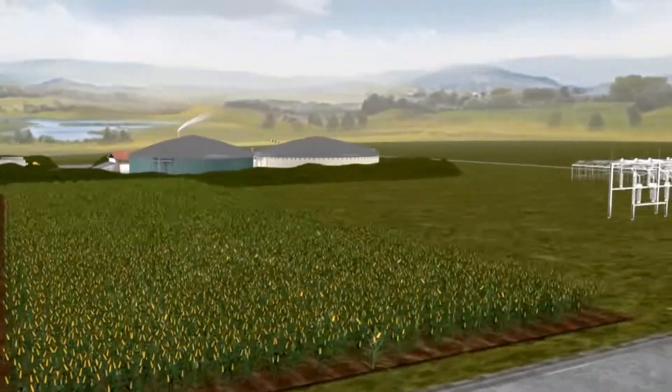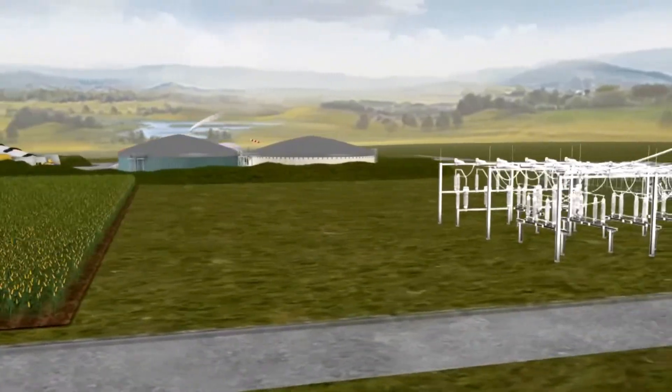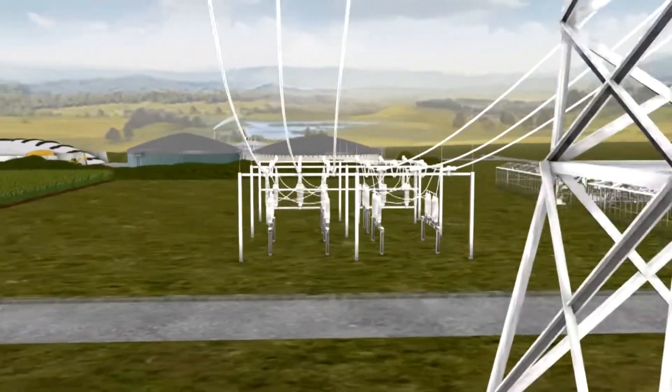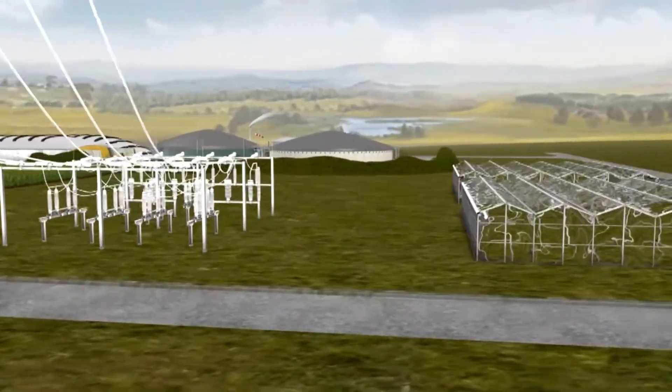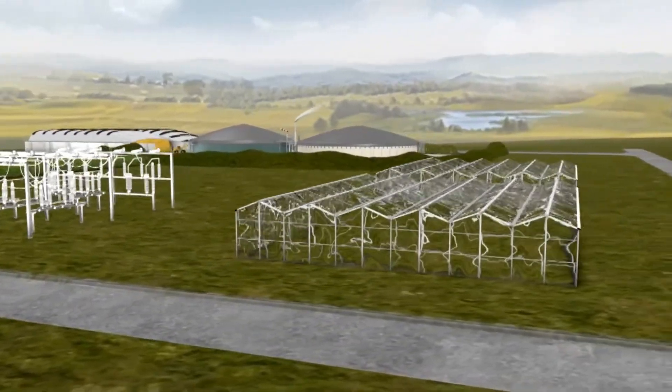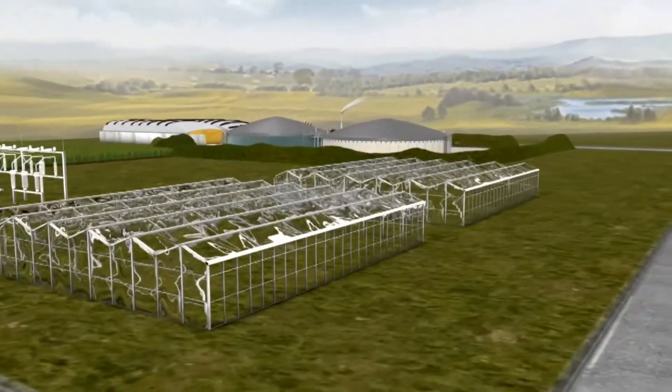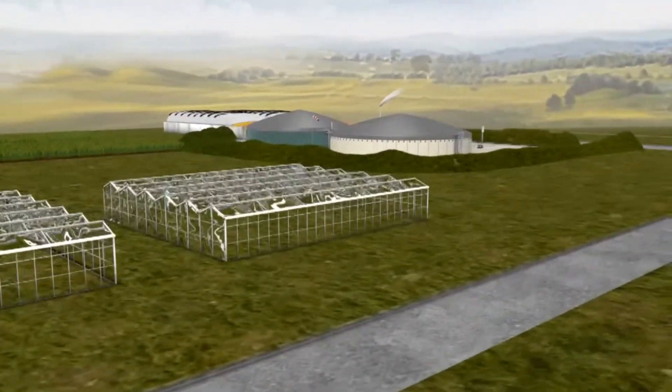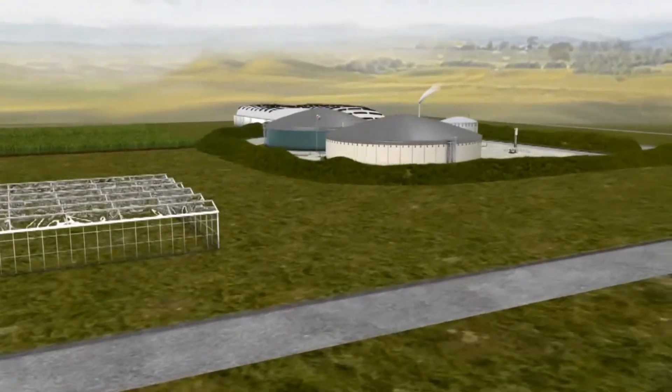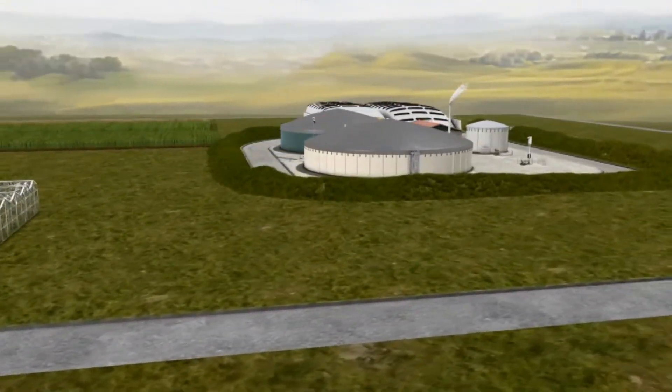In the process, the combined heat and power unit within the biogas plant creates not only electricity, but heat, which can be used in a variety of ways. An alternative to the production of electricity and heat is the upgrading of biogas to biomethane, which is supplied into the natural gas network.